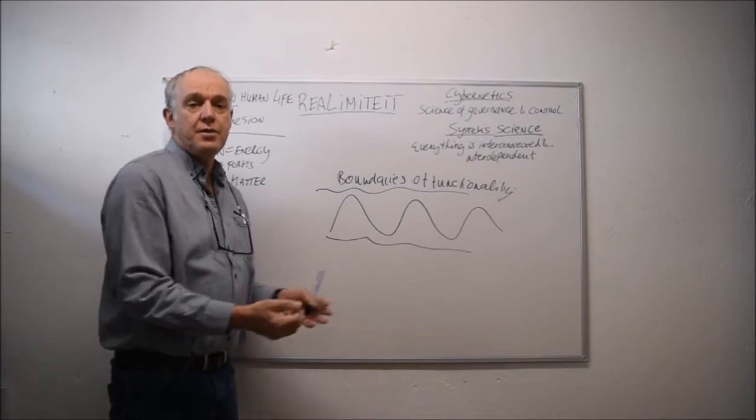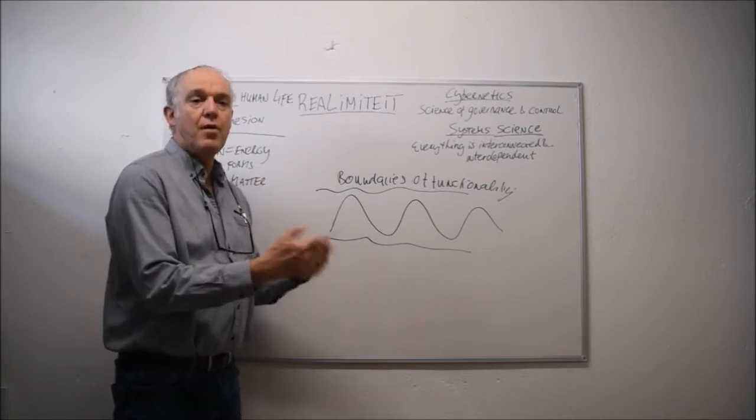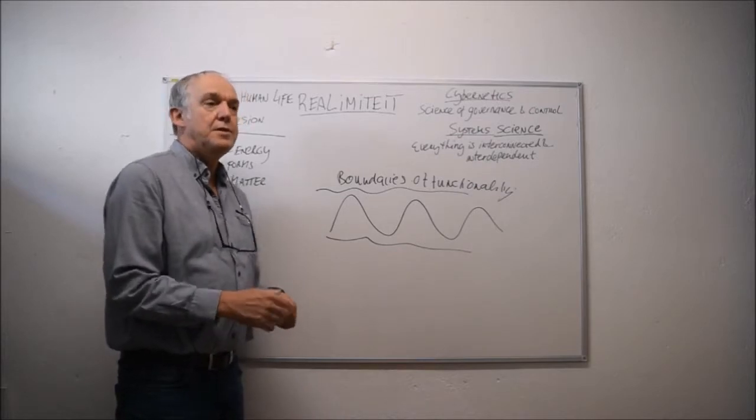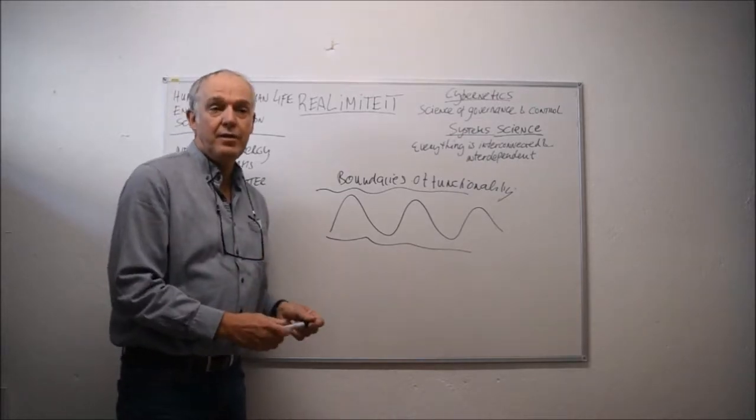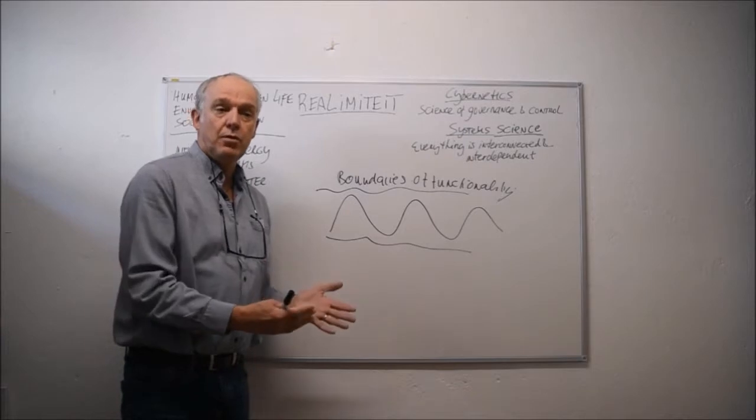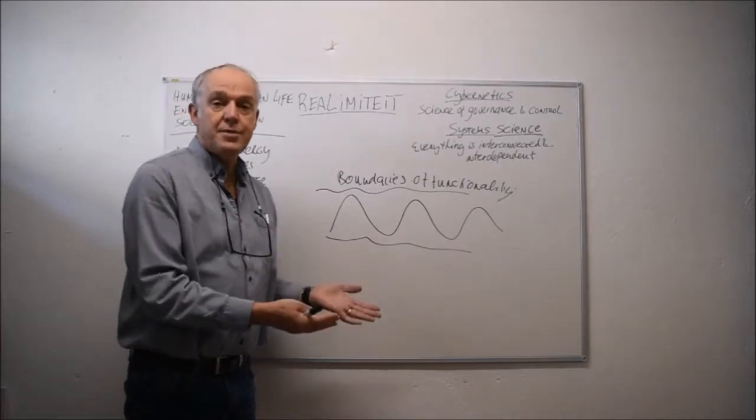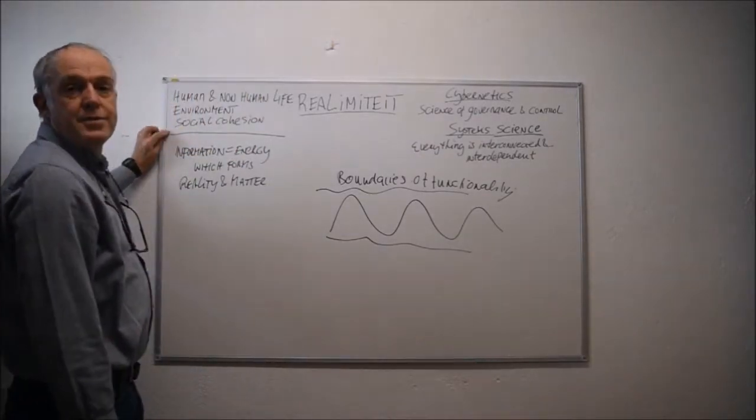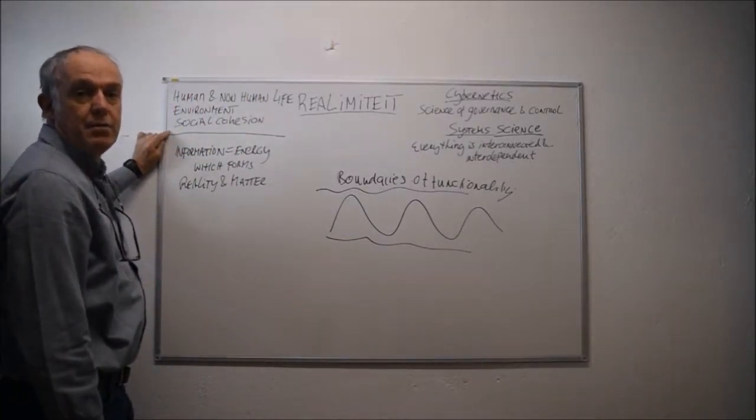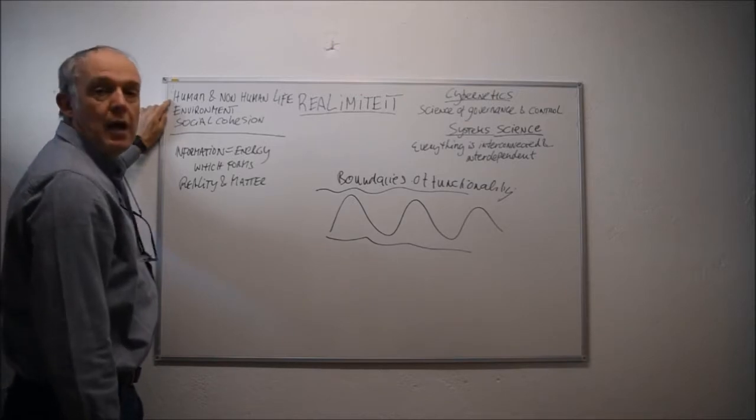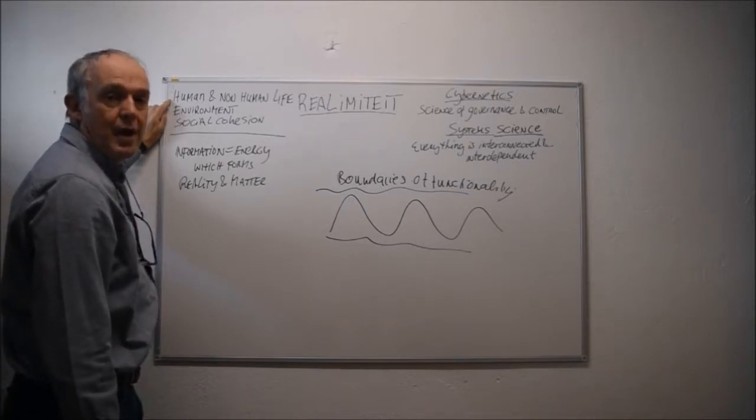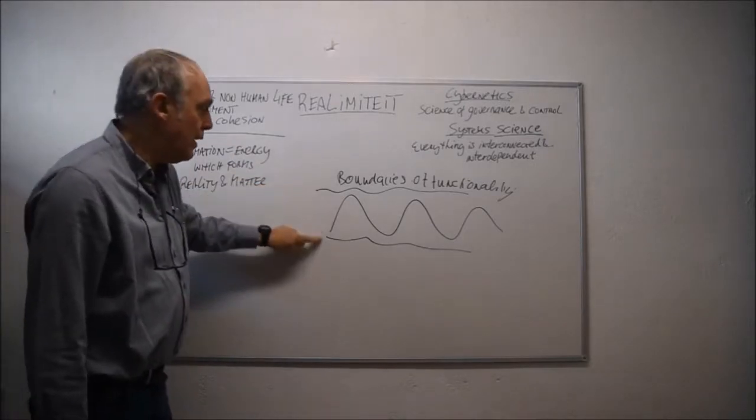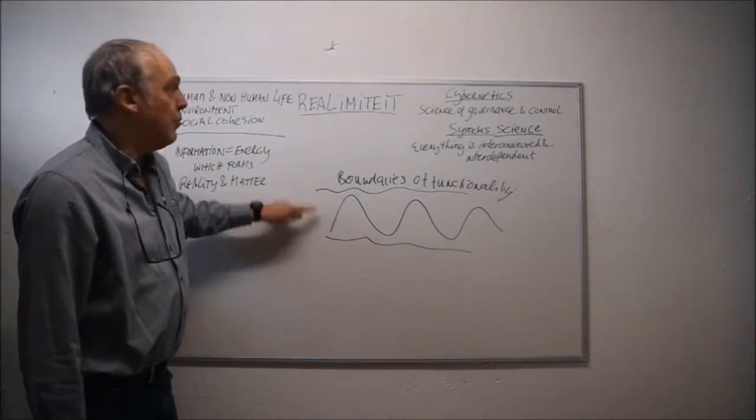Now, information about, let's say, the restrictions of making profit. For example, when a product or an ideology harms the environment, harms, for example, social cohesion, and even harms human and non-human life, that information needs to be put in also within these boundaries, within the realimiteit.